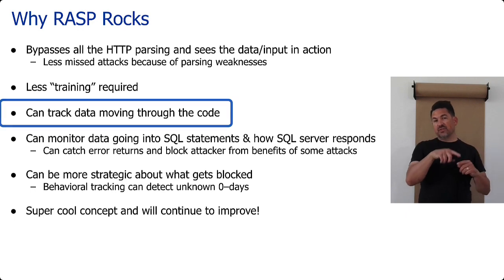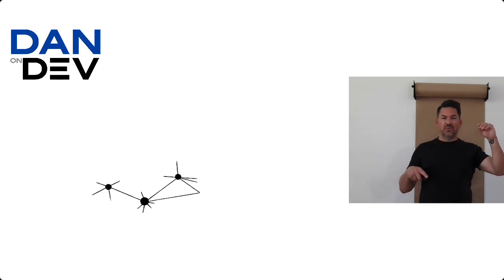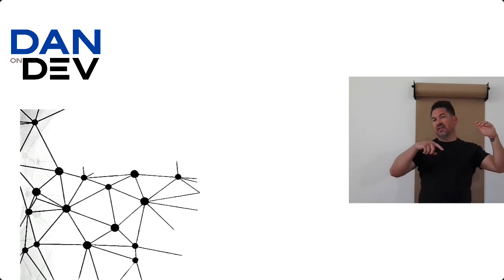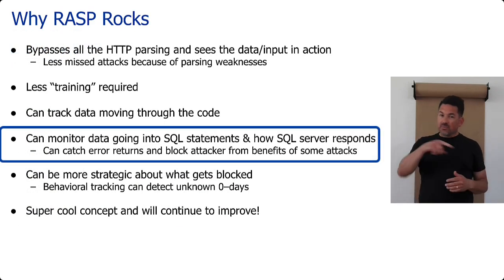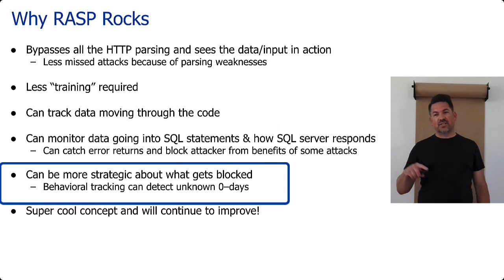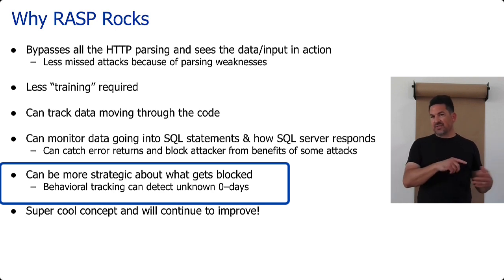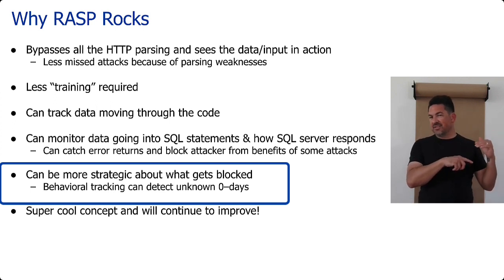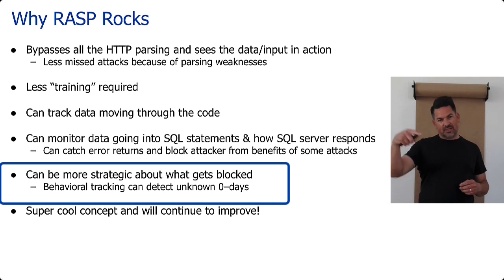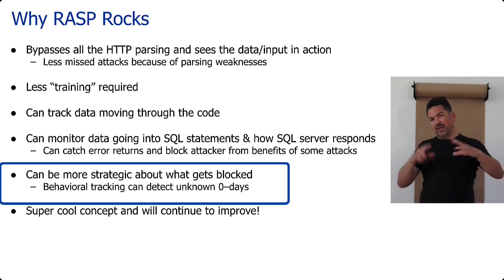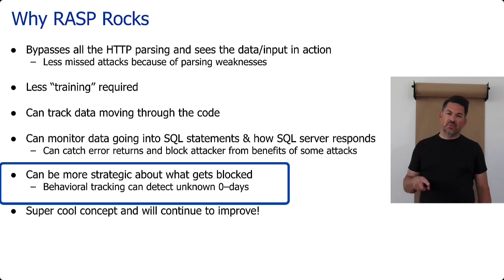You could track the data moving through the code. So you may be able to see the input comes in here and makes its way to this SQL statement over here. If you're connected to the SQL driver, you can actually see if it's getting through any kind of filtering in the code. So there's some really cool stuff you can see. I think it's a fantastic strategy for the way things need to be going. And you can also be very strategic about what gets blocked. With a WAF, you're kind of very broad — you're having to create filters that are looking for attack payloads wherever they come. In a RASP, I think it's a lot easier to drill in and apply stronger protection to specific areas, because you have a nice crawl map and you can see the code routes.